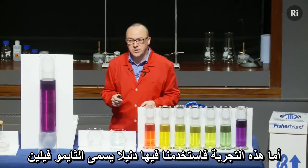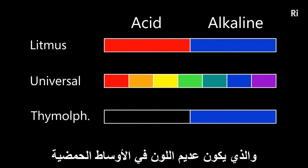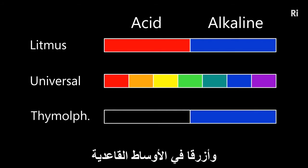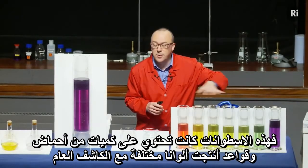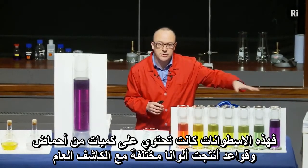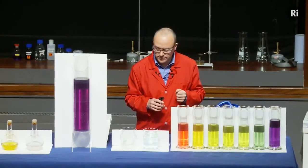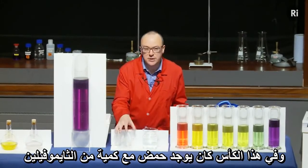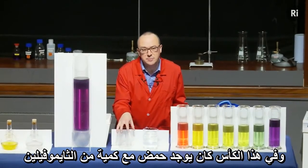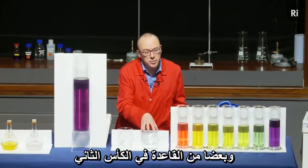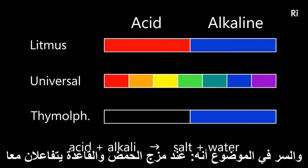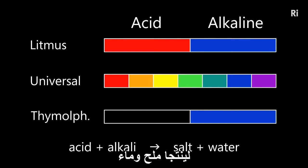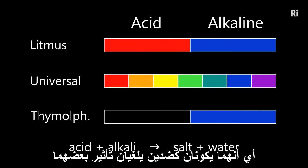This experiment was based on an indicator called thymolphthalein, which is colourless in acid and blue in alkali conditions. Those cylinders had different amounts of acid and alkali in them, producing the various different colours. The key to this is that when acid mixes with alkali, they react to produce a salt plus water. So they're sort of opposites — they kind of cancel each other out.